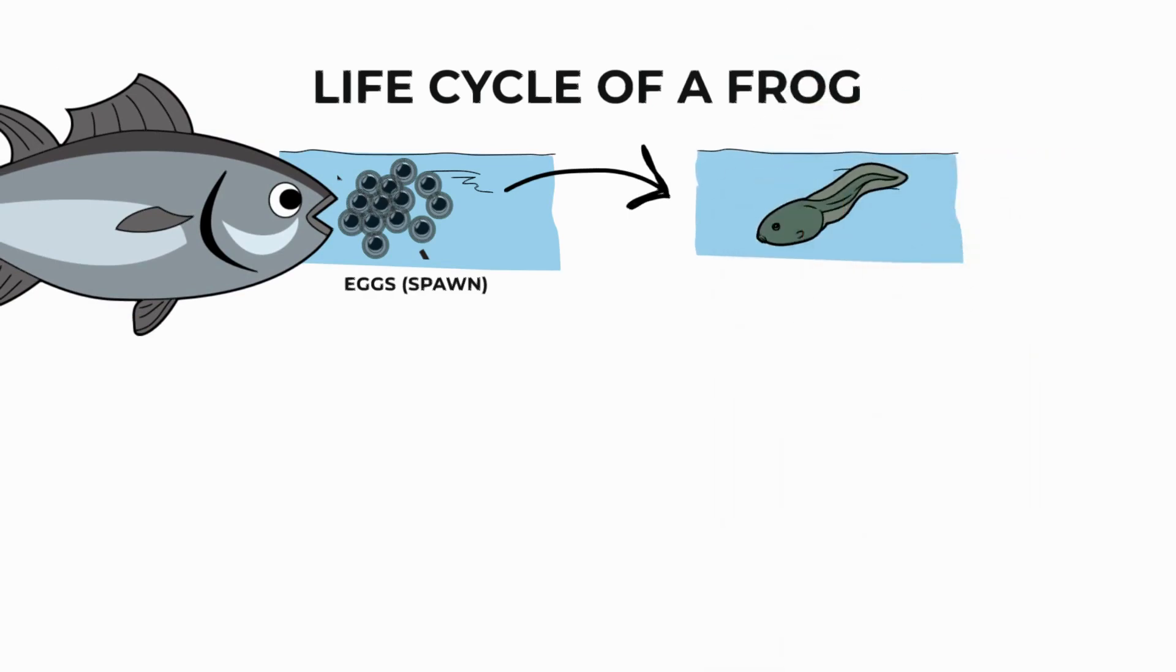Within a few days or weeks the eggs develop into a tadpole with a head and tail. The tadpole has gills to breathe and is dark in colour to hide from predators. It grows quickly.